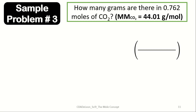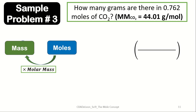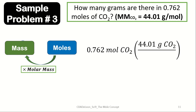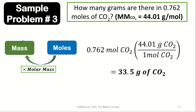Sample problem 3: How many grams are there in 0.762 moles of carbon dioxide, given a molar mass of 44.01 g/mol? We convert moles to mass by multiplying by the molar mass: 0.762 mol CO₂ × (44.01 g CO₂ / 1 mol). The moles cancel, leaving grams as our unit. This gives us 33.5 grams of carbon dioxide.